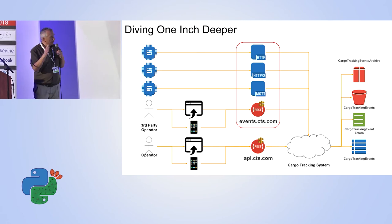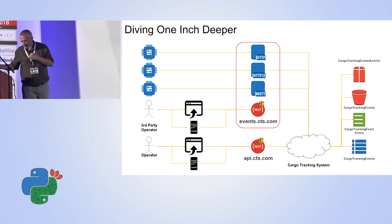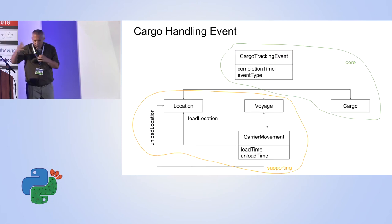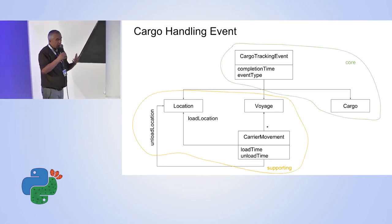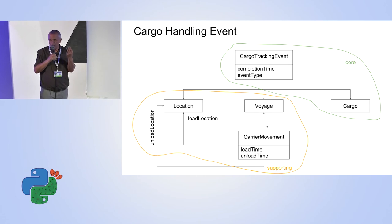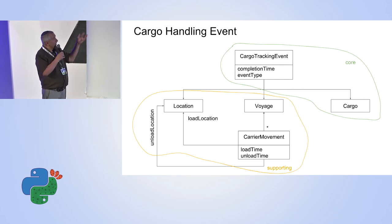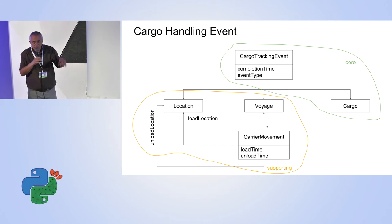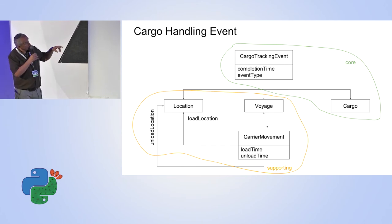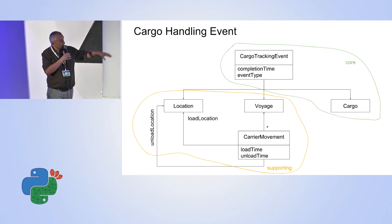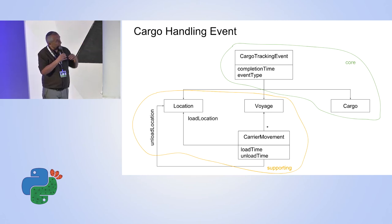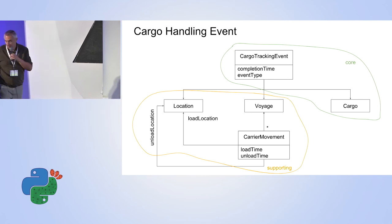It's technically involved, but it's still unclear how much domain logic is there. Looking at the domain model of an event: an event basically has three pointers — on cargo, on voyage (a planned schedule of a carrier moving point to point), and on location. Voyage and location belong to the supporting subdomain; the event itself and cargo are the core.